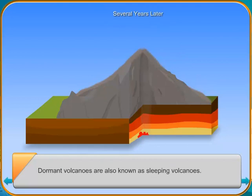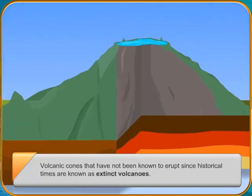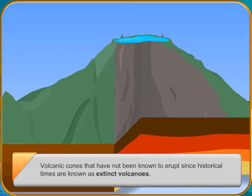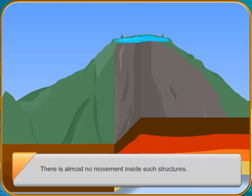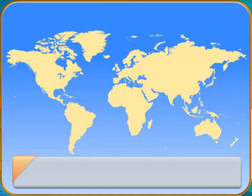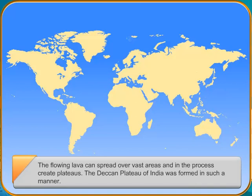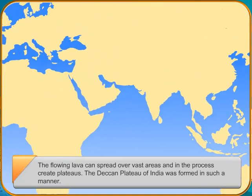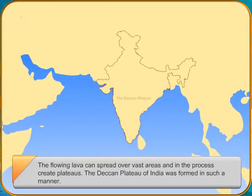The flowing lava can spread over vast areas and in the process create plateaus. The Deccan Plateau of India was formed in such a manner. Most of the world's active and dormant volcanoes are found in two belts. One encircles the Pacific Ocean and the other is the mid-continental belt which cuts across the middle of Europe and Asia through the Alps and Himalayas.